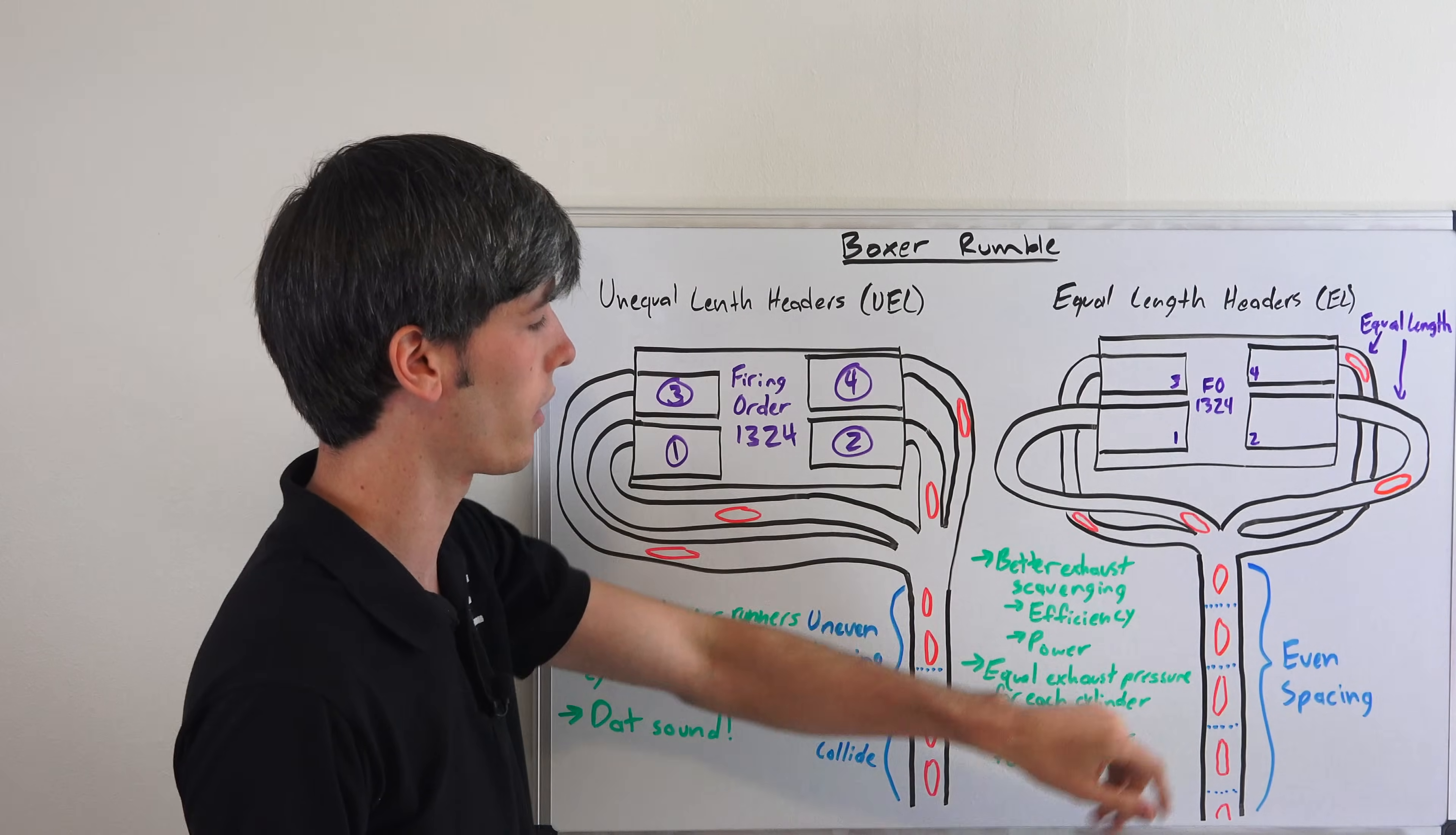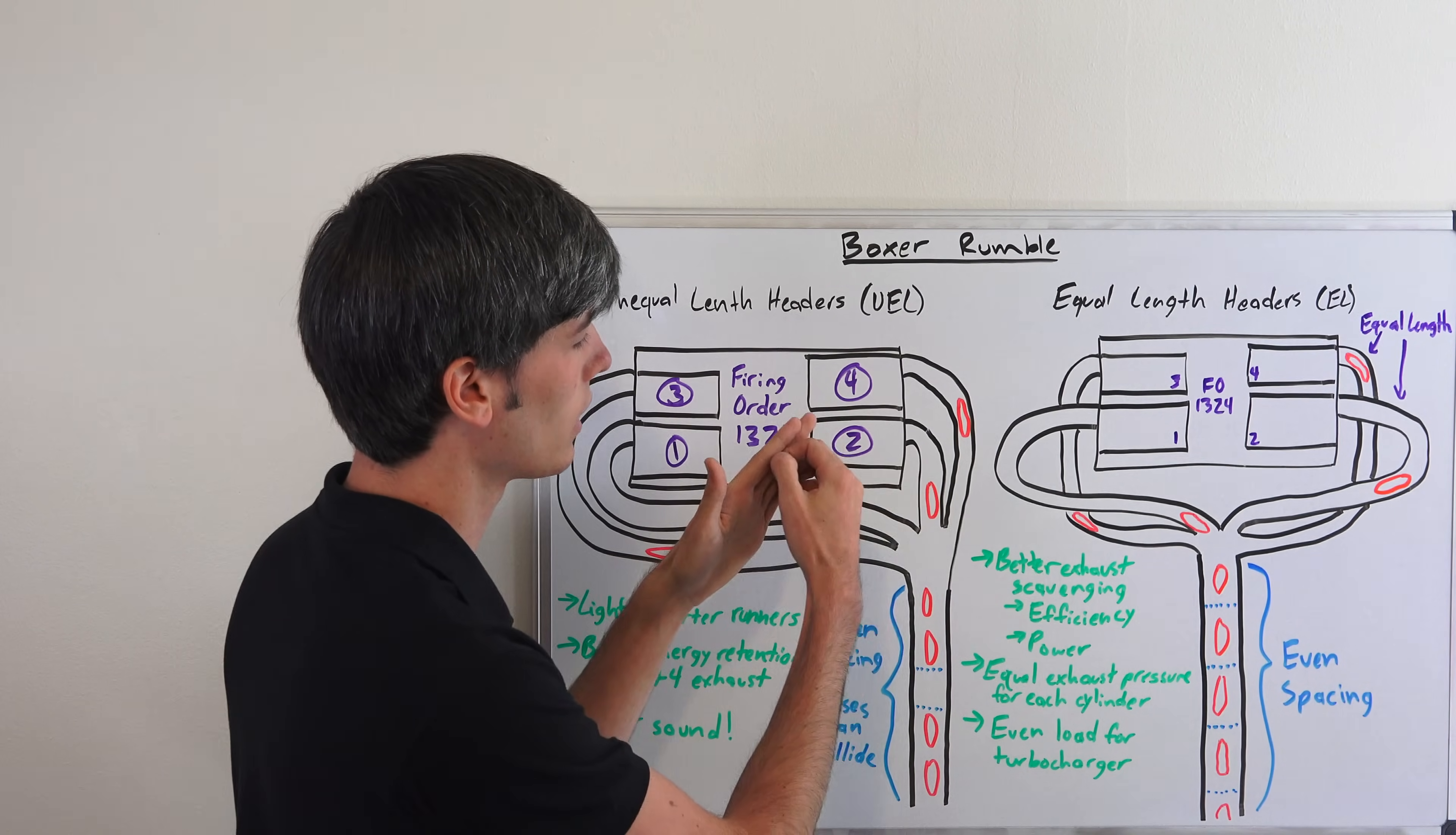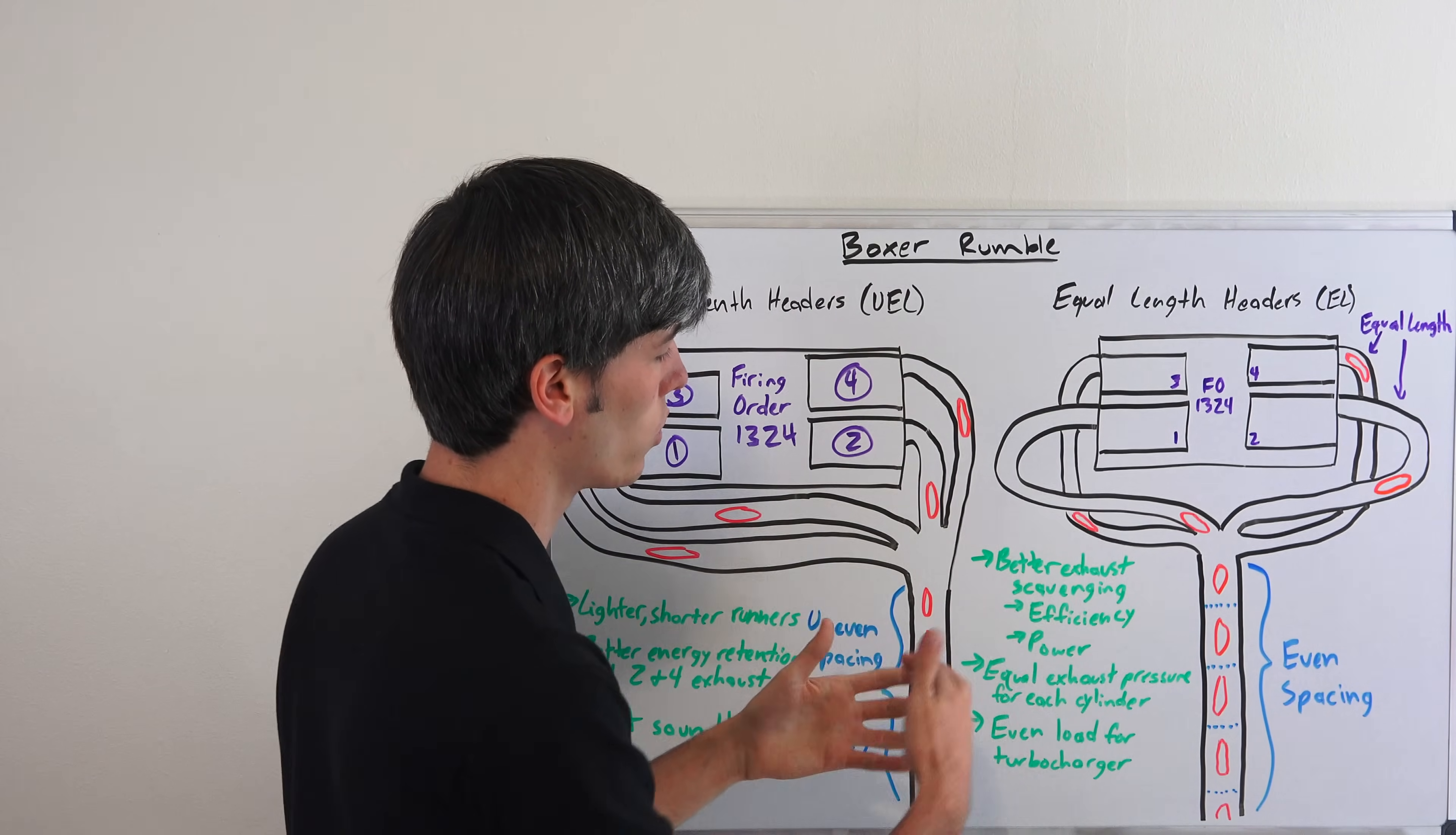The benefits of an equal length header: first of all you have better exhaust scavenging and this gives you more efficiency and better power because you have equal exhaust pressure. You have a lack of pressure behind the exhaust pulse and that helps pull out the next exhaust pulse. That gives you exhaust scavenging, more power, more efficiency.